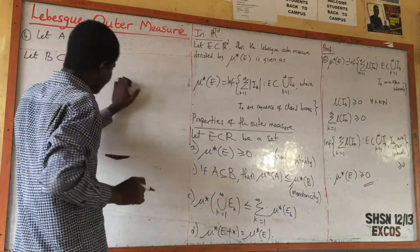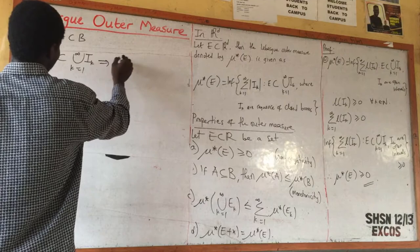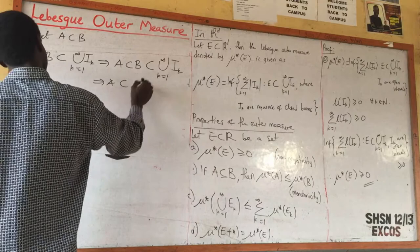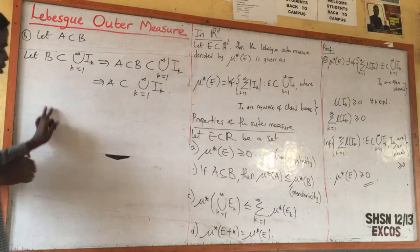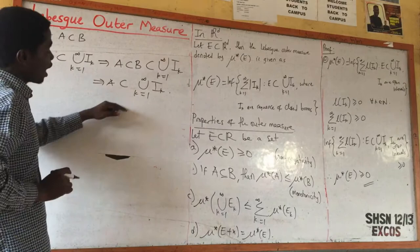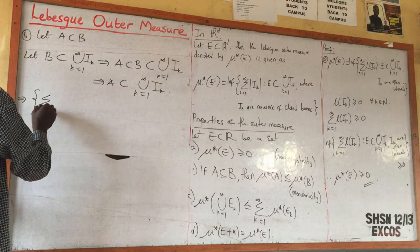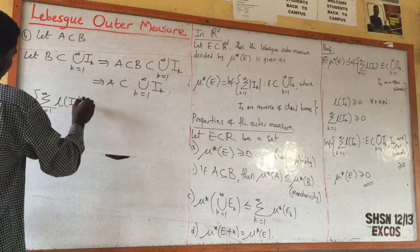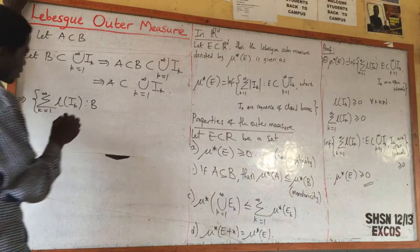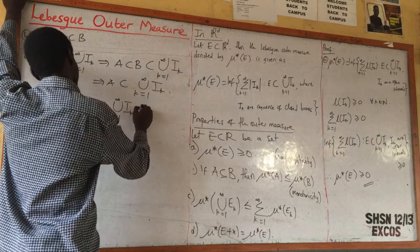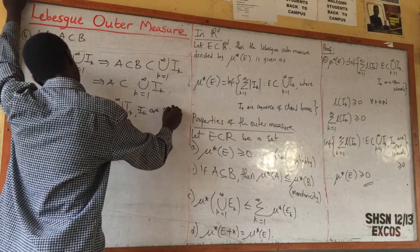Since A is contained in B, and B is contained in the union from k=1 to infinity of I_k, it means that A is also contained in the union from k=1 to infinity of I_k. The outer measure of B is defined as the infimum of the summation from k=1 to infinity of the length of I_k, such that B is inside the union of I_k, where I_k are a sequence of open intervals.